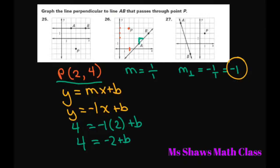Add 2 to both sides. And you can write b equals 6. And you're just going to plug that back in. You get y equals negative 1x. I'm just going to write as negative x plus 6.